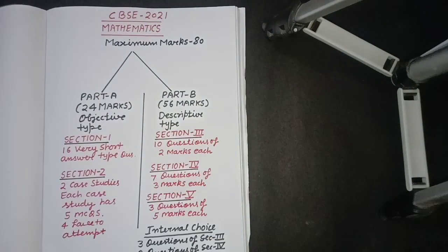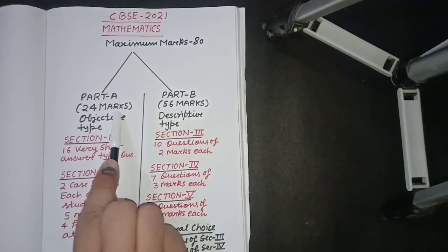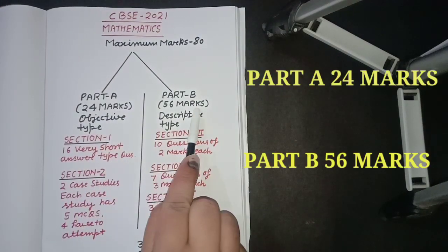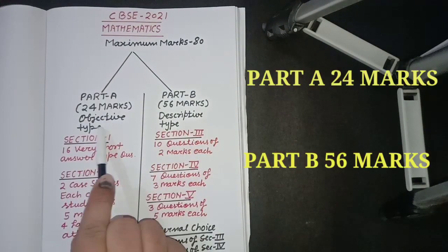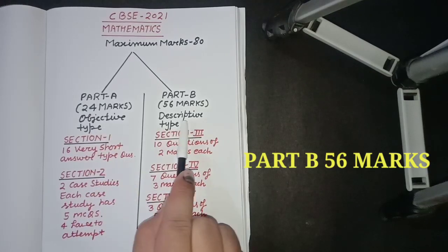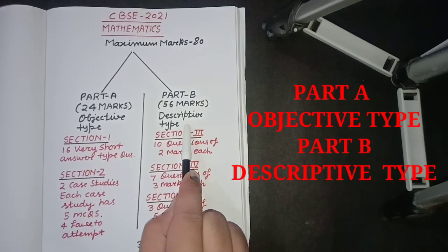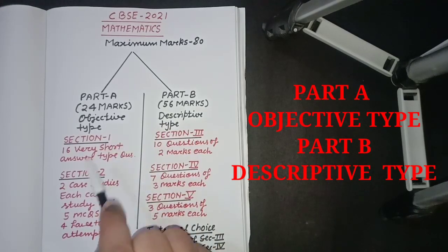Part A will consist of 24 marks and Part B of 56 marks. Part A will be of objective type questions, Part B will be of descriptive type questions. Now Part A consists of two sections: Section 1 and Section 2.